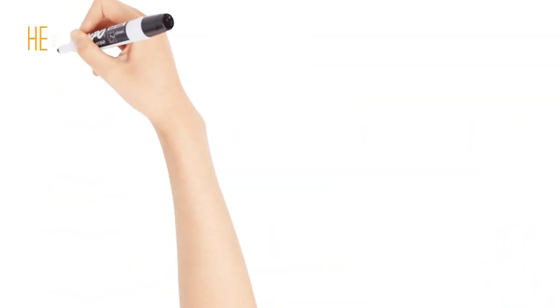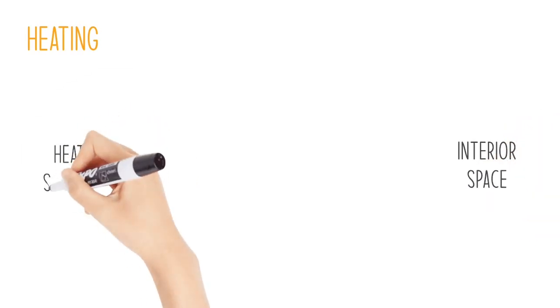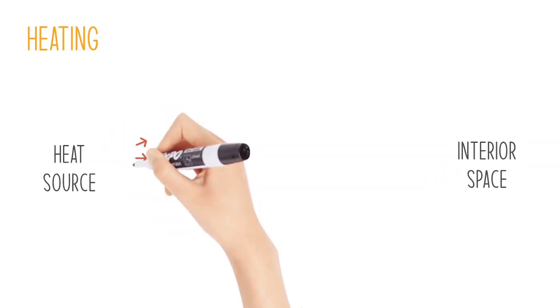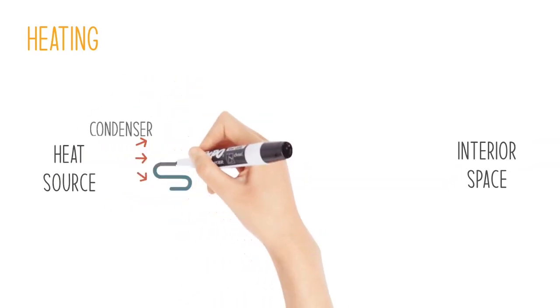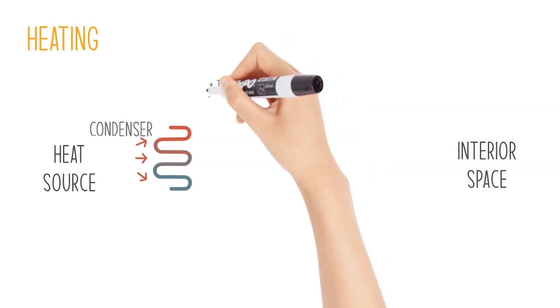And now let's take a look at the heating scenario. To heat the space, we use the same cycle in the opposite direction. We now take the heat from the heat source through the condenser. The refrigerant condensates, making it hot. It flows to the compressor where the pressure increases.